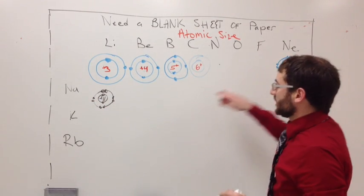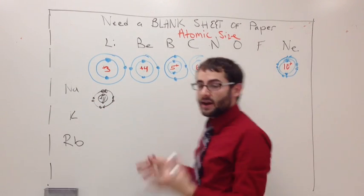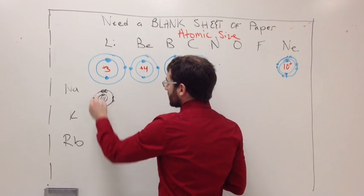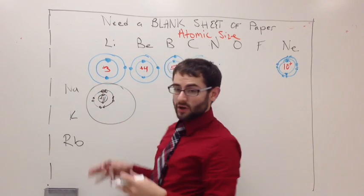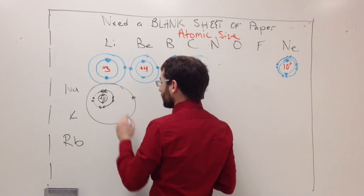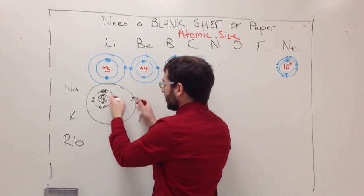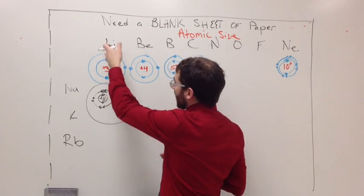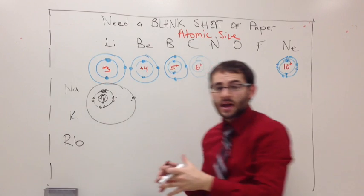Alright? Now what we have would be neon. It looks the same as neon. And now there's no more room in this ring. So what you have to do is you have to draw another ring. And these rings are huge. The reason is both of these things are negatively charged. They don't want to be near each other. So as you go down, you can see that the size increases.